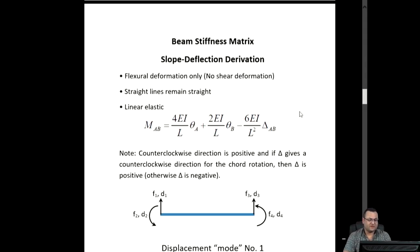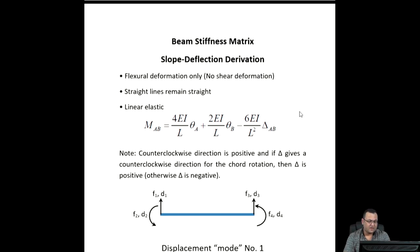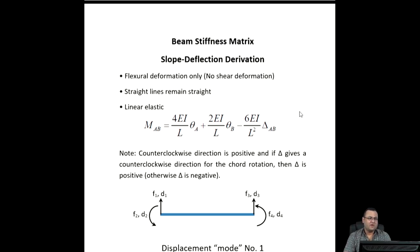For the beam stiffness matrix, we will use the slope deflection method to derive the beam stiffness matrix. We will assume that no shear deformation and we will consider only flexural deformation. We will assume that the straight line in the cross section before deflection will remain straight after deflection. We will also assume a linear elastic relationship for the material behavior — that means we are applying Hooke's law, which is sigma equal E epsilon.